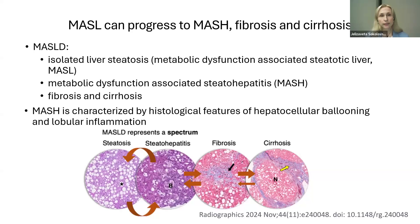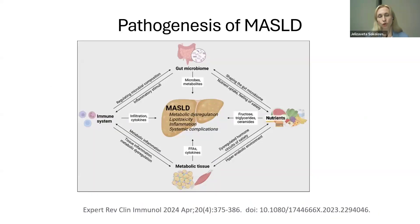MASLD is a severe condition due to its progressive nature. The term MASLD incorporates not only isolated liver steatosis but also metabolic dysfunction associated steatohepatitis (MASH), fibrosis, and cirrhosis. MASH is characterized histologically by hepatocellular ballooning and lobular inflammation. The genesis of MASLD is complex, with contributing factors including detrimental nutritional factors such as high fructose and sugared beverages, increased body fat, and dysfunctions in the immune system and gut microbiome.